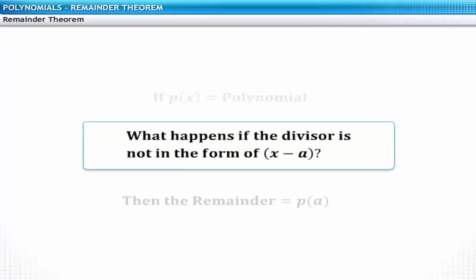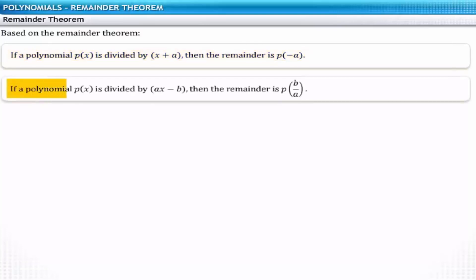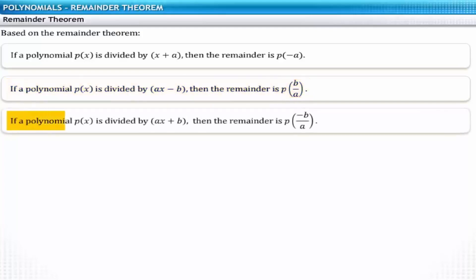The remainder theorem specifies the remainder when the divisor is x minus a. However, there may be cases where the divisor does not appear in that form. If p of x is divided by x plus a, the remainder is p of minus a. If divided by ax minus b, the remainder is p of b divided by a. If divided by ax plus b, the remainder is p of minus b divided by a.